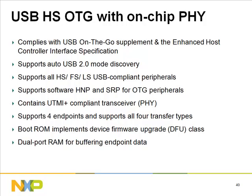USB high-speed OTG with on-chip PHY: the OTG controller is complemented by a UTMI Plus compliant transceiver. The LPC 313X supports four endpoints and all four transfer types including isochronous. The boot ROM implements the device firmware upgrade class for field updates. For transmit, the endpoint size is 128×36 bits; for receive, 256×36 bits. The USB block uses dual-port RAM for buffering endpoint data — a 128×36 bit buffer per in-endpoint and a single shared 256×36 bit buffer for multiple out-endpoints.